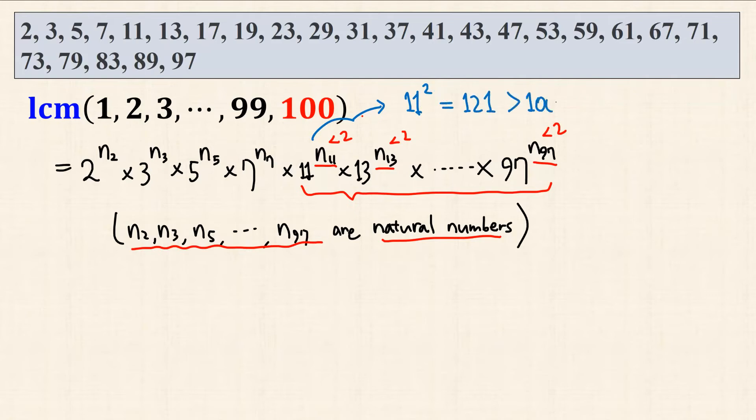which is greater than 100, as you have already seen. This means that these exponents must be 1. Therefore, this number is given as 2 to the power of n2, 3 to the power of n3, 5 to the power of n5, 7 to the power of n7,